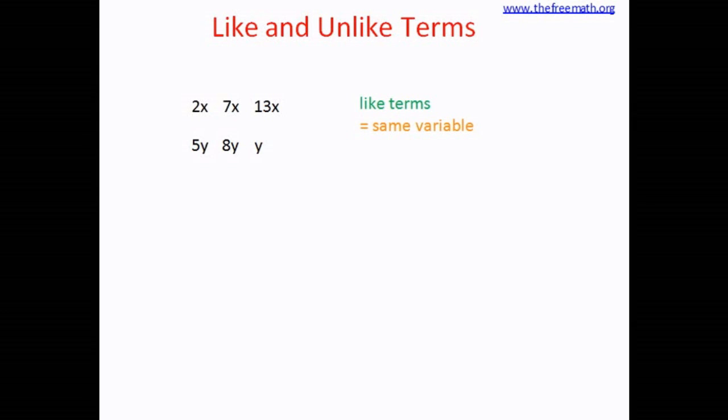Now what about this 9a and 5b? Here the terms have different variables. Such terms are called as unlike terms.